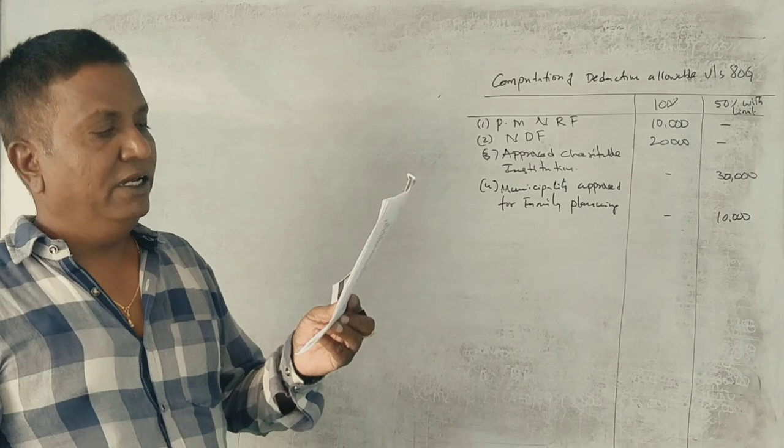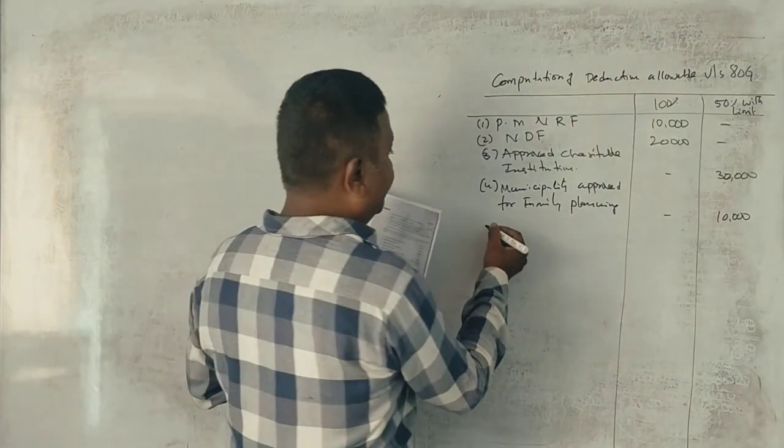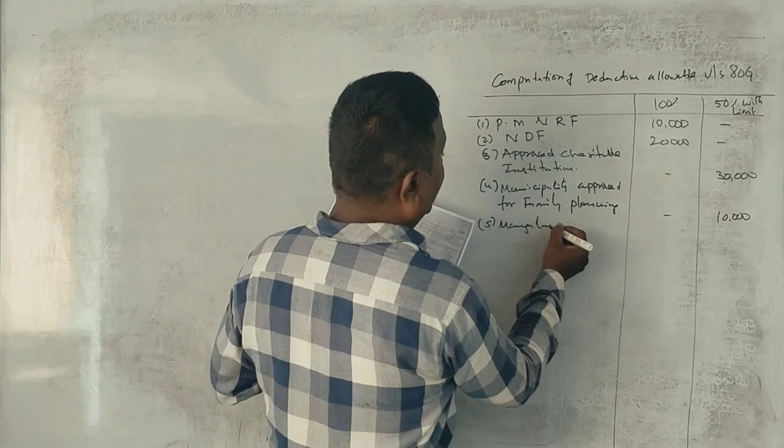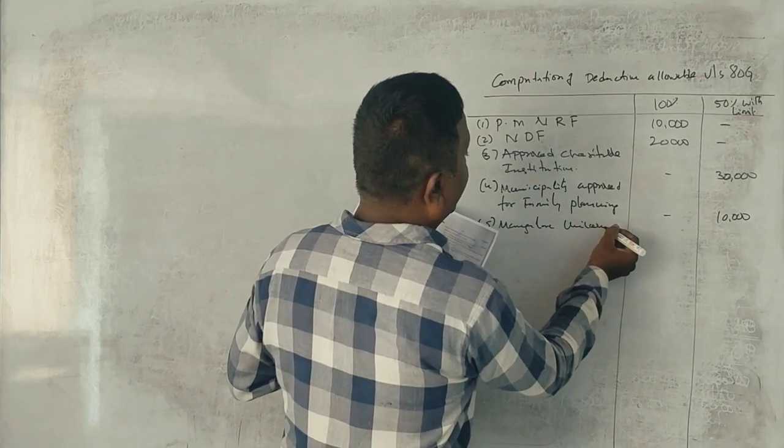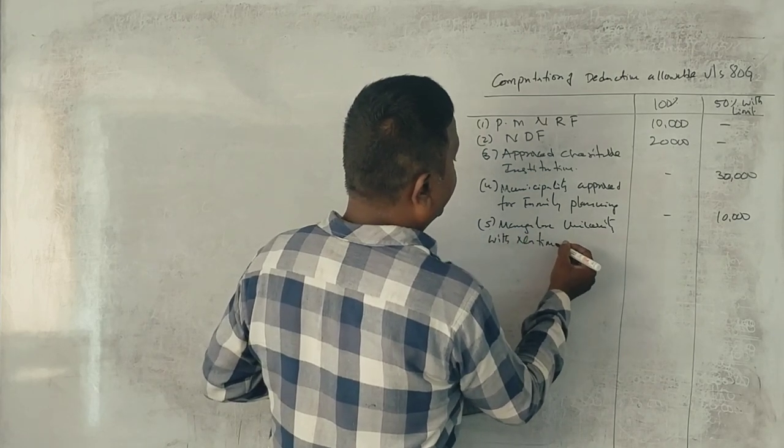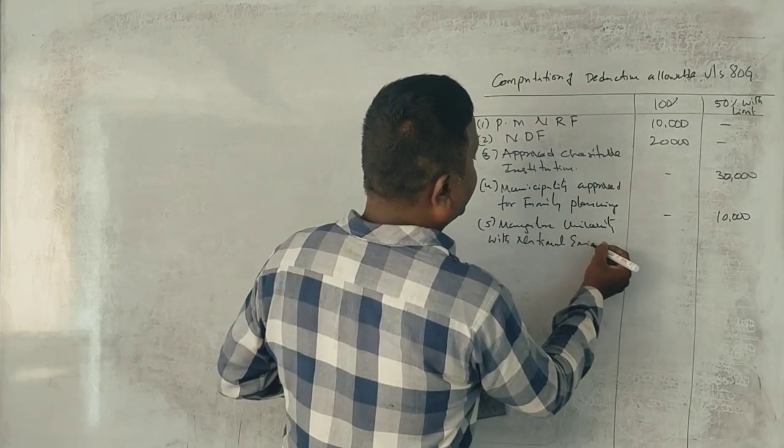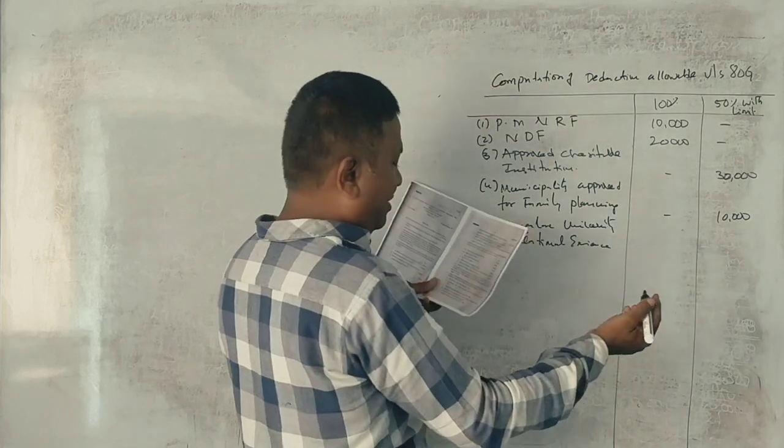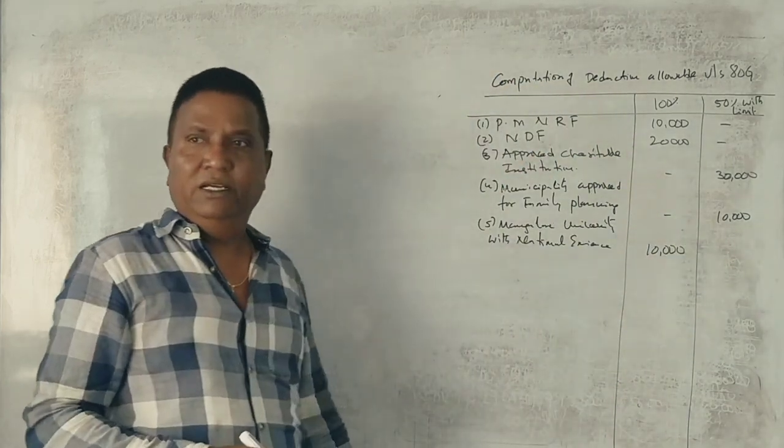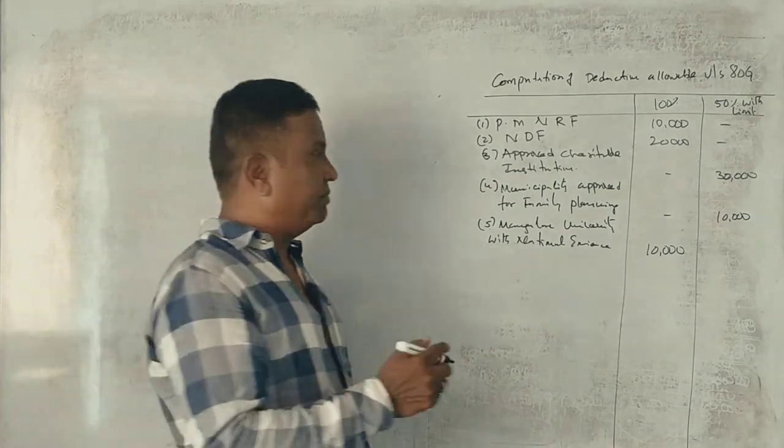Next, Mangalore University of National Eminence - how does it work? With national eminence it is 100%, without eminence 50% with limit. With national eminence 100%.